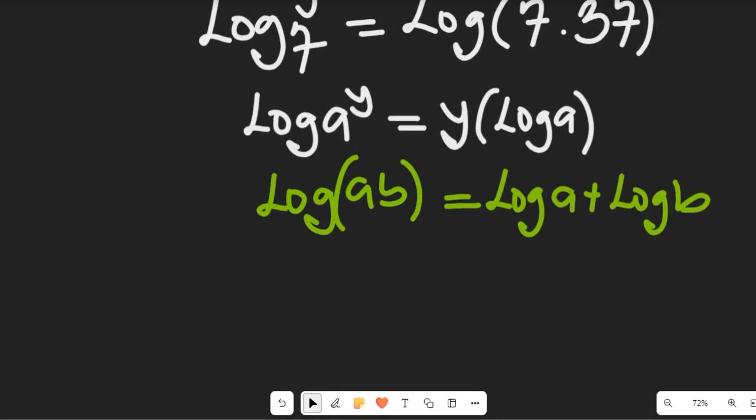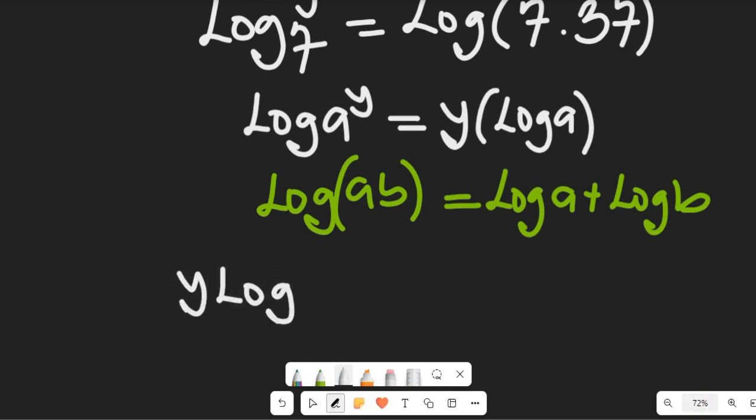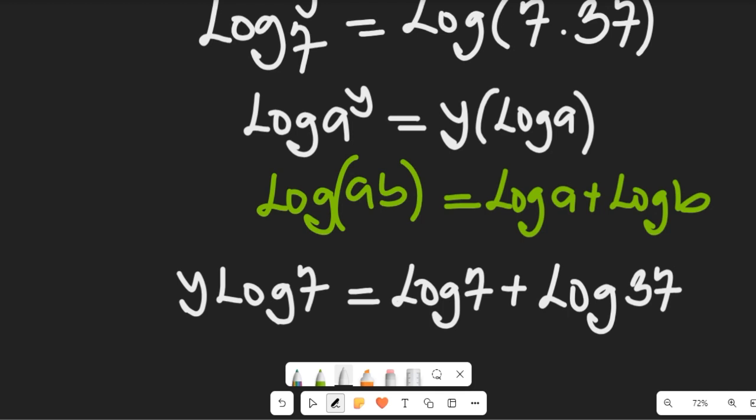Now let's look at that. If we apply that to the expression, we're going to have y log of 7 equal to log of 7 plus log of 37. Great.